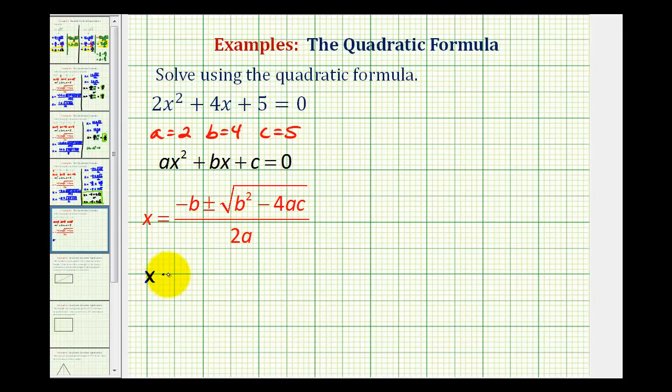So we'll have x equals negative b, which is negative 4, plus or minus the square root of b², which is 4², minus 4 times a times c, where a is 2 and c is 5.